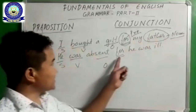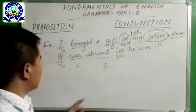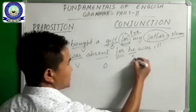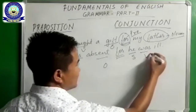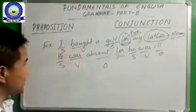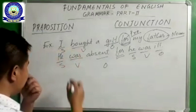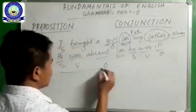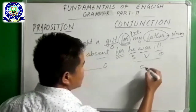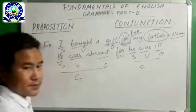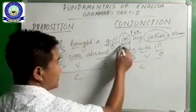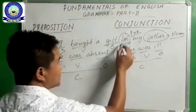In the second sentence, see: subject, verb, object in the first part — that is one clause. And here also we have subject and verb — that is also one clause. Therefore, 'for' becomes a conjunction.